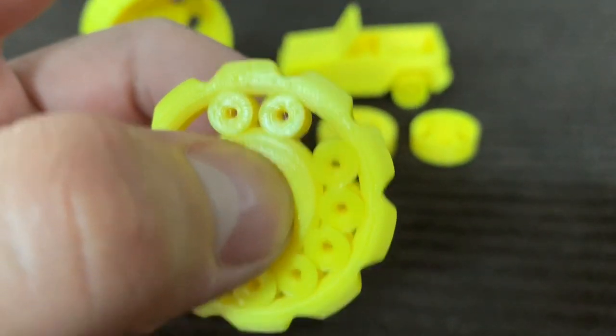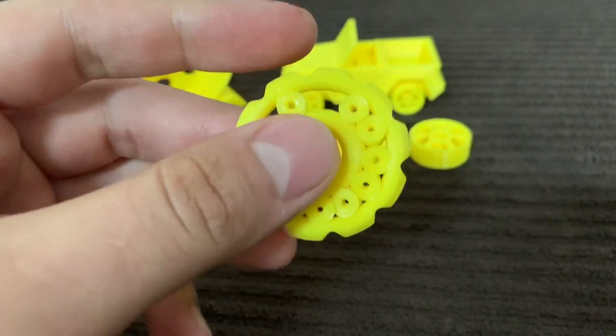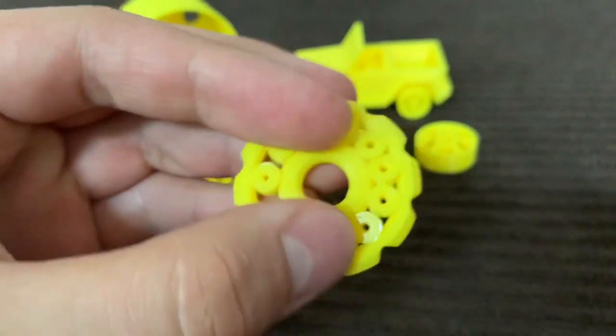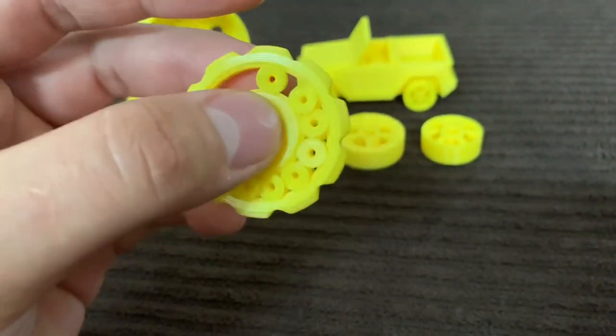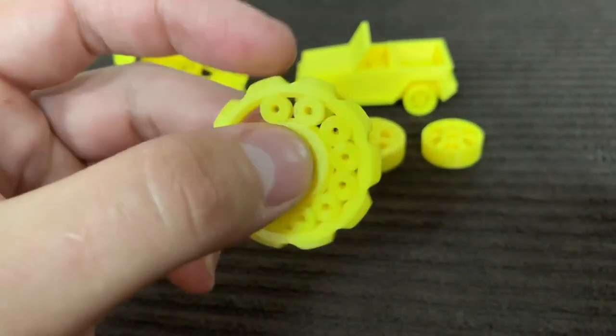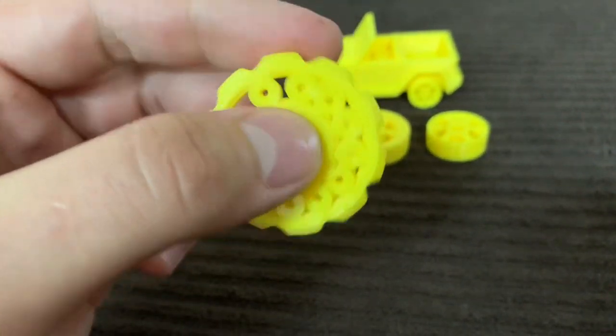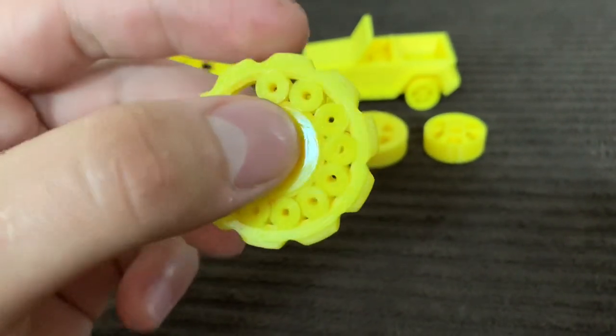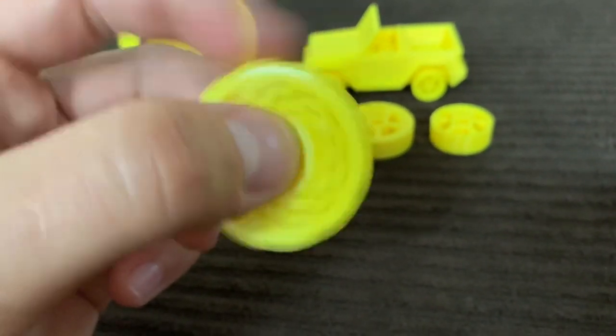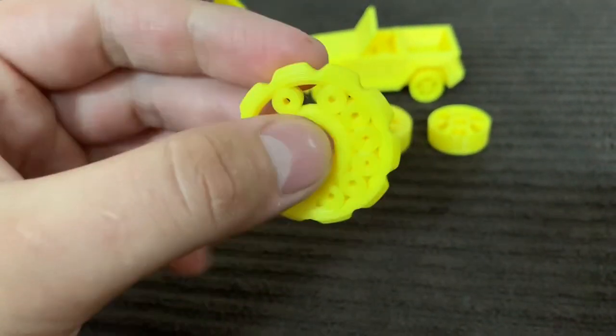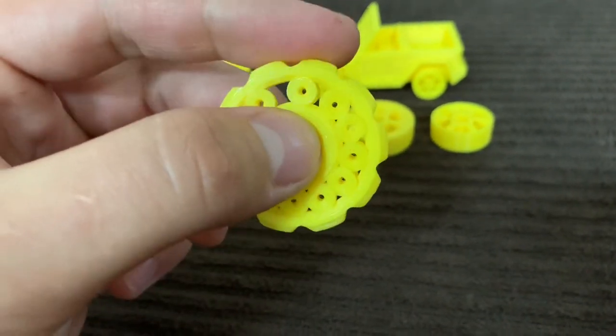Even if you didn't do it right when you printed it, pro tip: use a hair dryer or a heat gun to warm up your plastic. I use PLA mostly. Warm up your plastic and it will do it again.